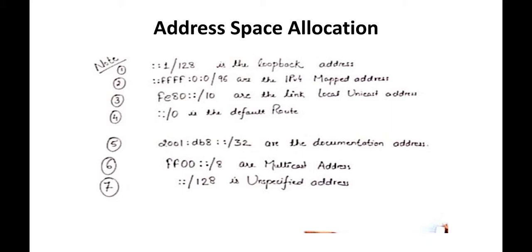In IPv6, there are a total of eight sections. Double colon means we compress multiple zero sections. So ::1 means seven sections of zero and one section of 0001, in hexadecimal format — total eight sections and 128 bits. The address ::1/128 has all 128 bits reserved for the loopback. In IPv4, the range 127.0.0.0 was reserved for loopback.